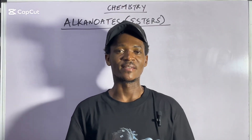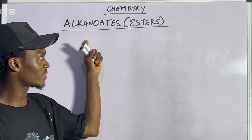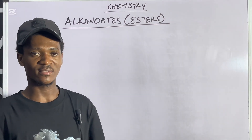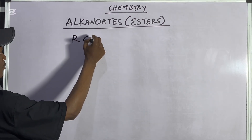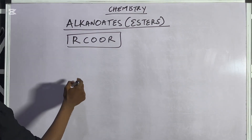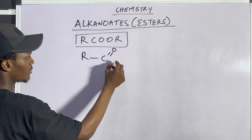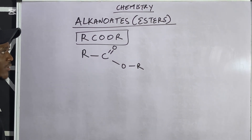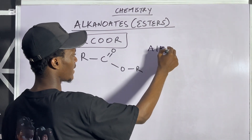Welcome back to my channel. This time we are going to have a short video lesson on alkanoids. Alkanoids are under organic chemistry; they are also regarded as the esters. They have a general formula RCOO, and it can be represented structurally as R then C=O and O then R. Remember that R represents an alkyl group.